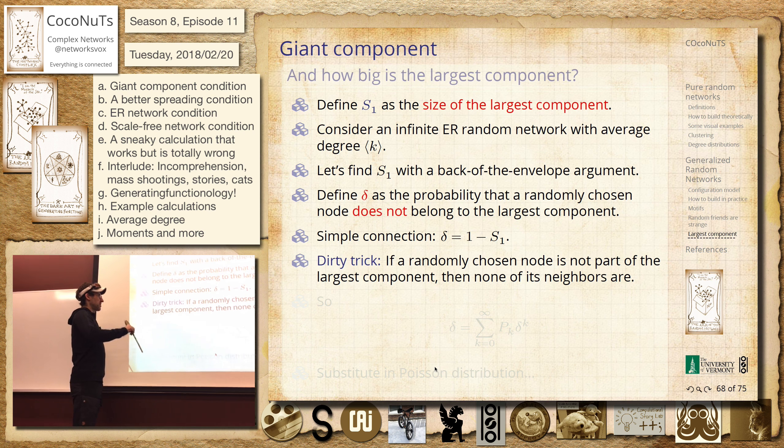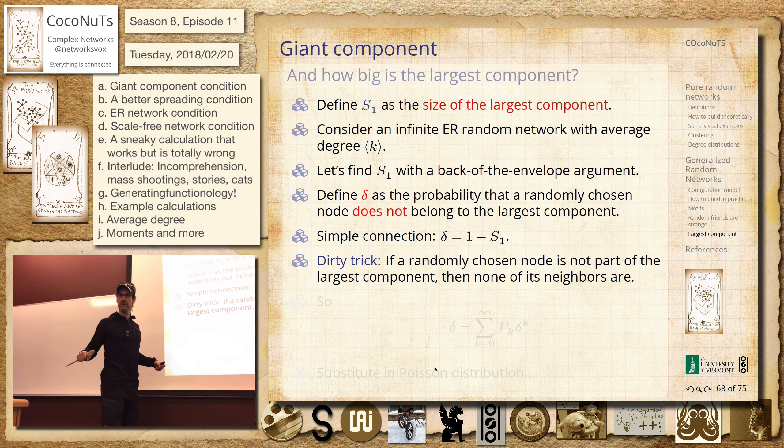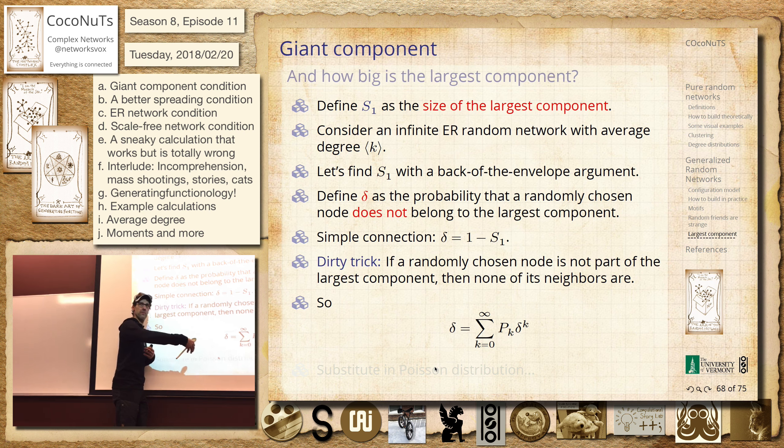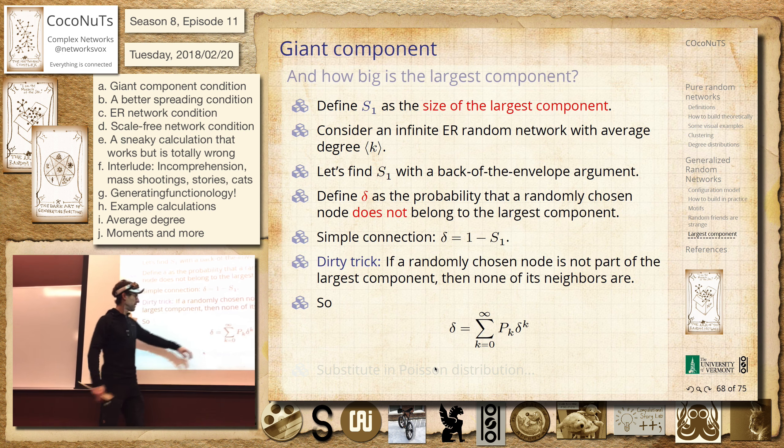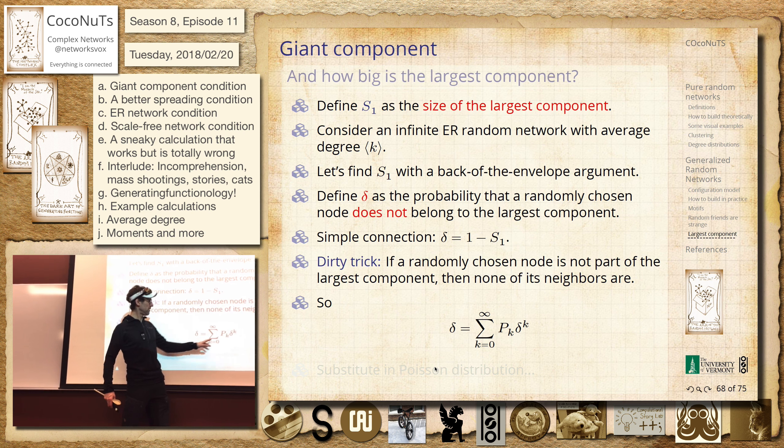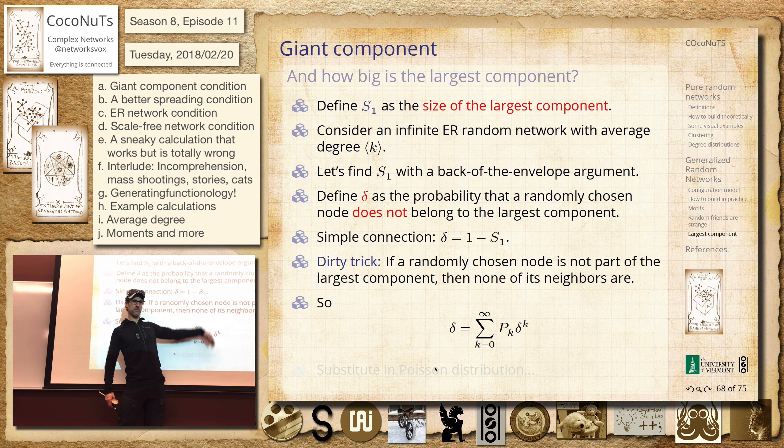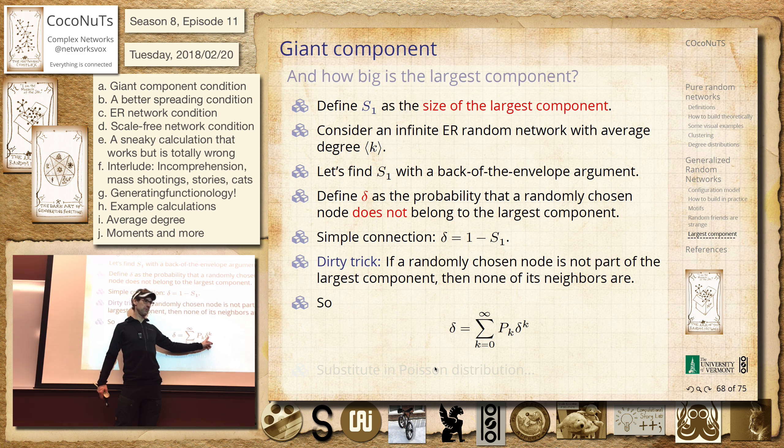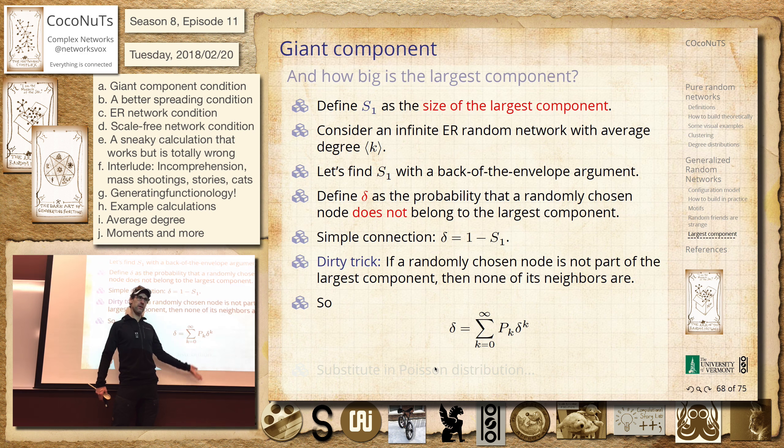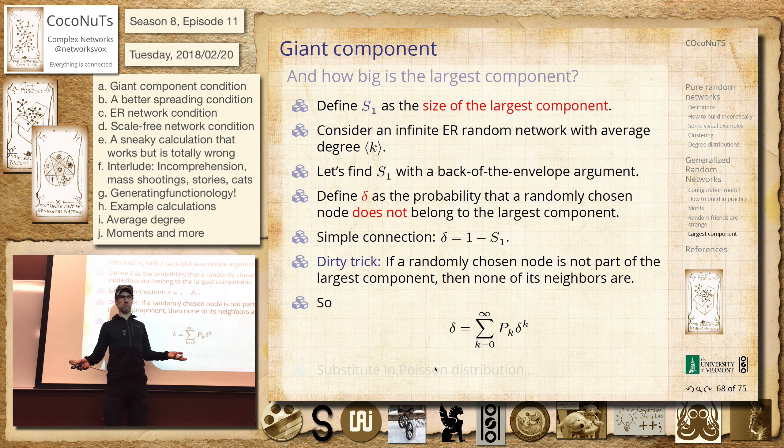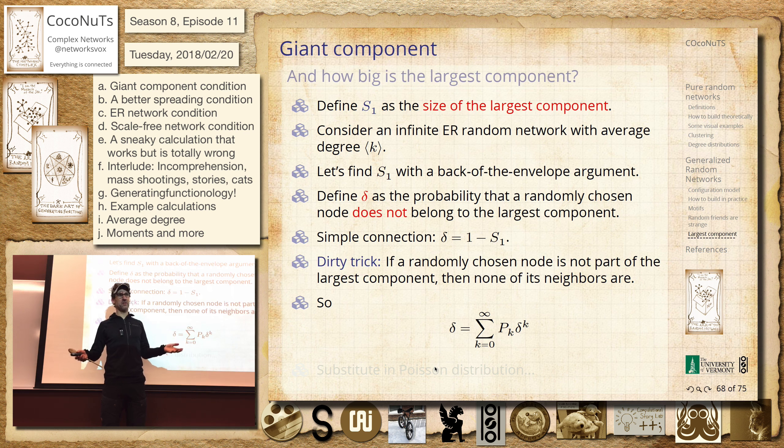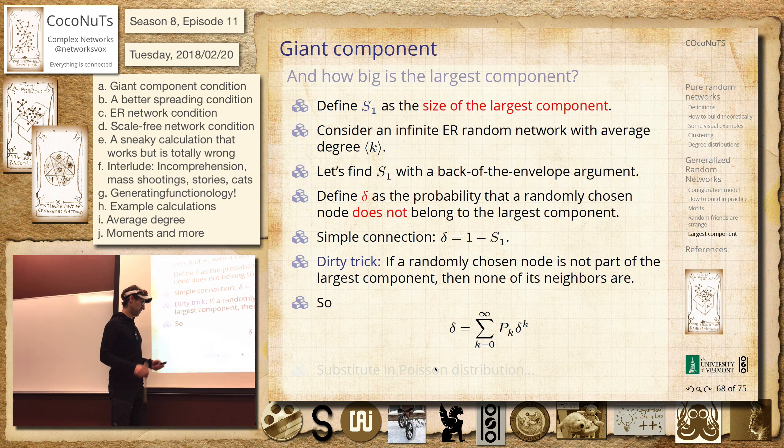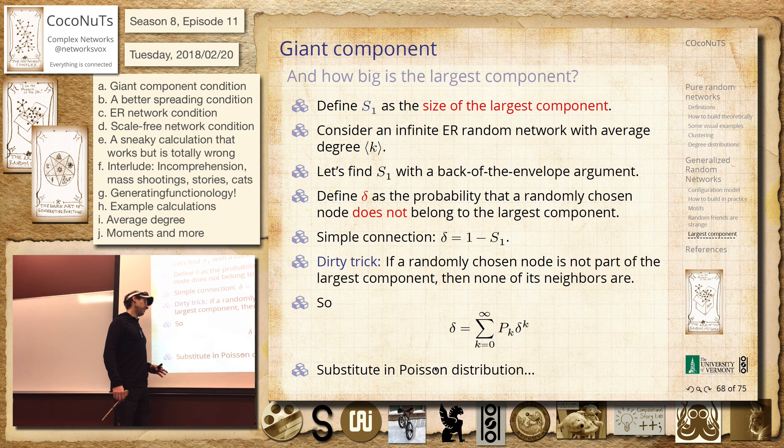So if a node is not part of the largest component, then none of its neighbors can be, right? So we can, and then because we've got randomness, we can think, well, maybe we can make a little recursive calculation. We don't have to like go out to two neighbors and three neighbors. You know, it's just one set will work. So this would have to be true, right? So you can easily be led in this way. And people have sort of put this in papers and books.